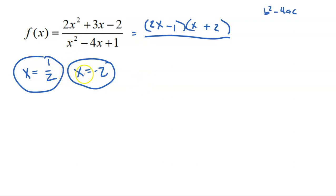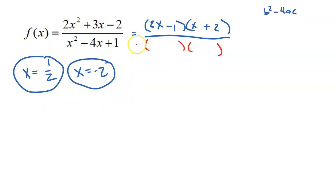Checking the denominator with B squared minus 4AC: negative four squared is 16, minus four times one times one gives the square root of 12 — so the denominator is unfactorable with irrational roots. That means one half and negative two definitely don't make the denominator equal to zero. So I have two final solutions: one half and negative two.